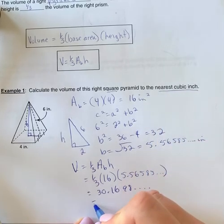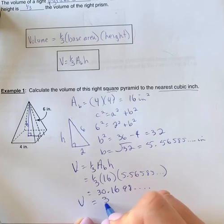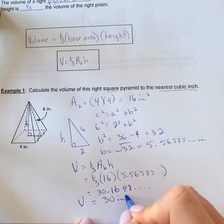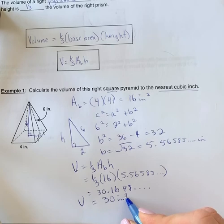you're going to have the volume is equal to 30 inches cubed. With volume, remember that your dimensions, it's three dimensional. So inches cubed, you want to make sure you put your little three there.